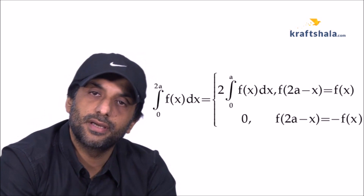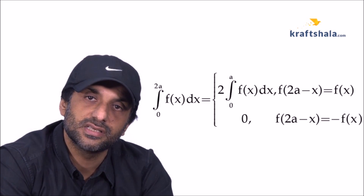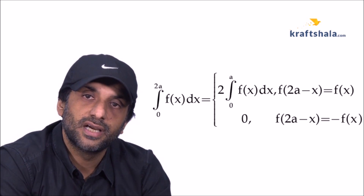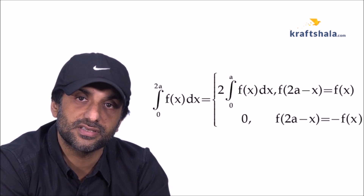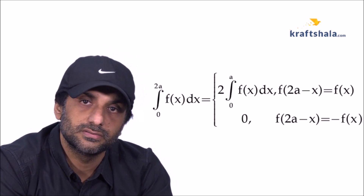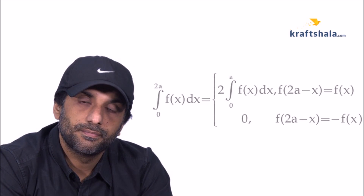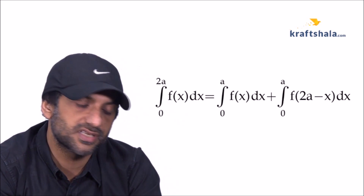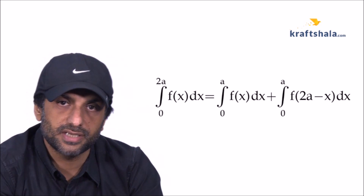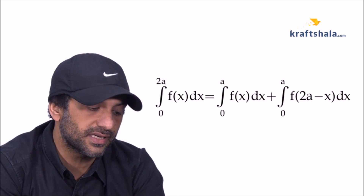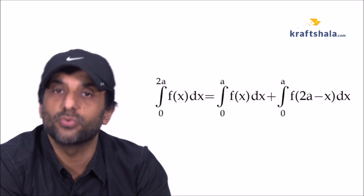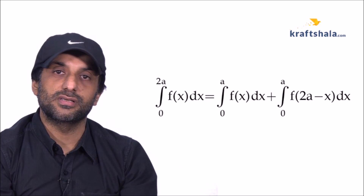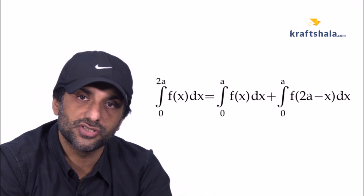The final property covers the integral from 0 to 2a of f(x) dx. It can be written as twice the integral from 0 to a of f(x) dx whenever f(2a − x) = f(x). When f(2a − x) = −f(x), it can be expressed as the integral from 0 to a of f(x) dx plus the integral from 0 to a of f(2a − x) dx. All these properties hold true for continuous functions in the given domain.